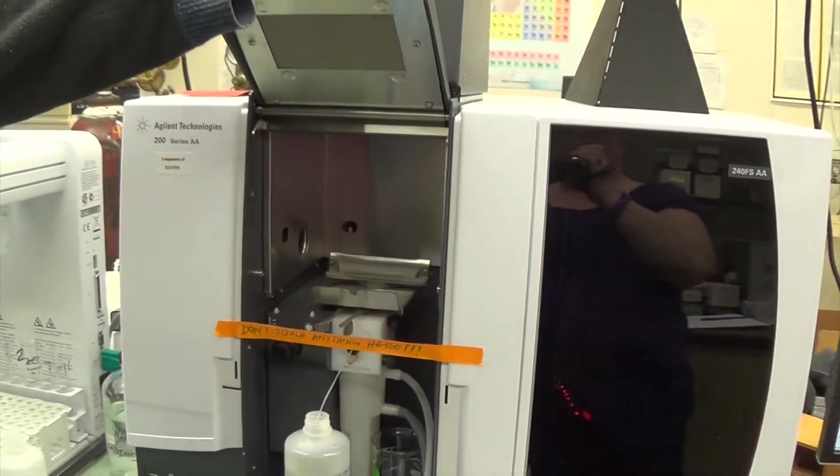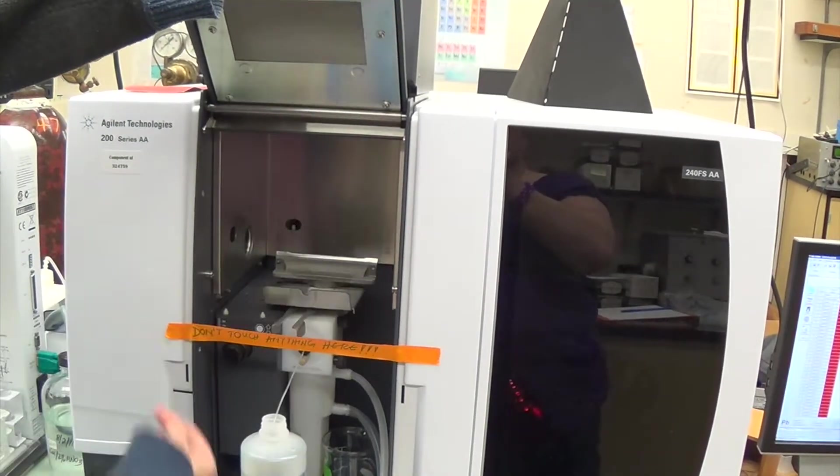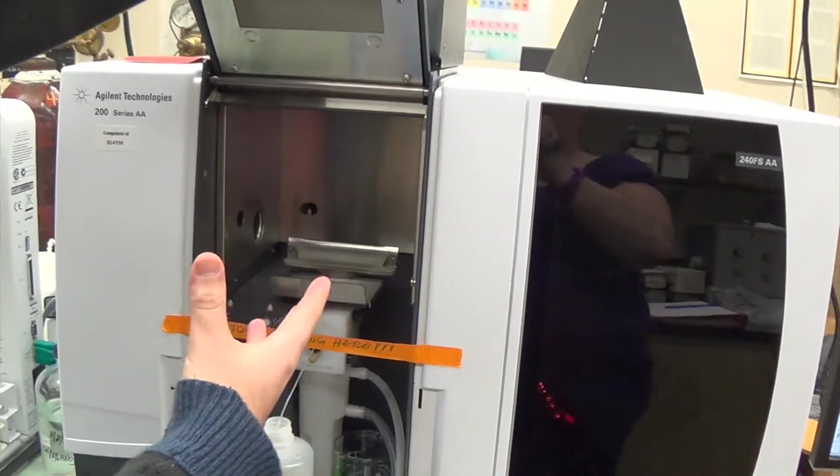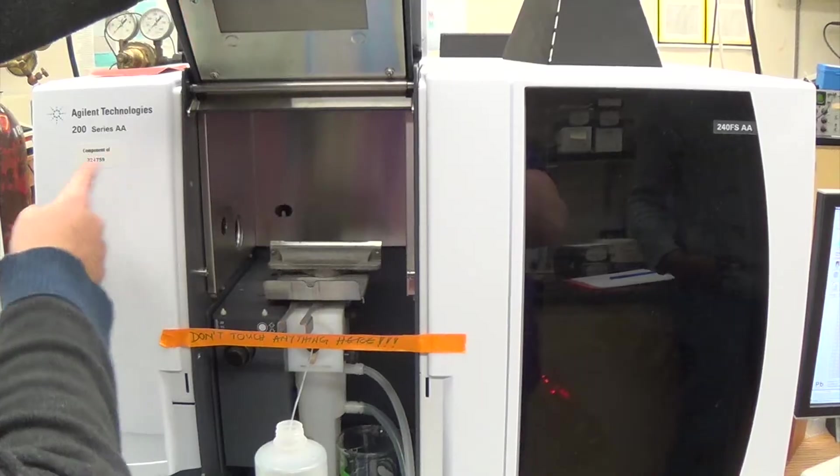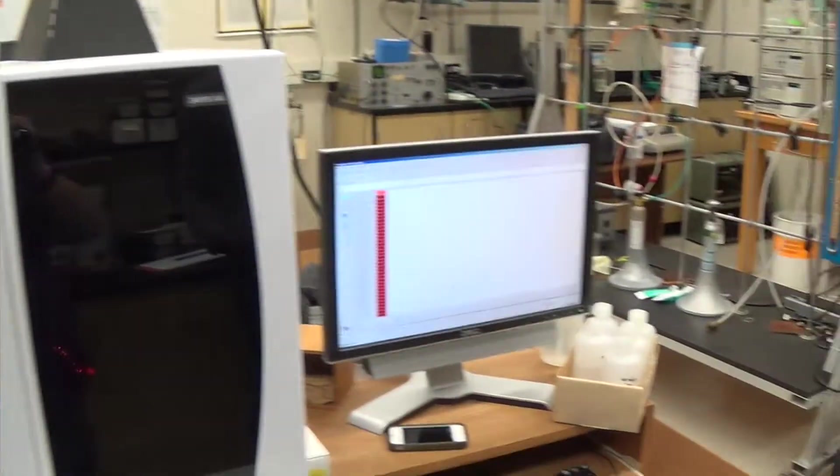And once this gets going in a second, the burner actually right there will be lit up with fire, and the light will come through. Our sample gets taken up, the water gets removed and goes through the burner. The sample gets excited by the light, and all the light emitted gets collected inside over here. There's a detector, the detector sends it over to the computer, and we read that data out as a number.